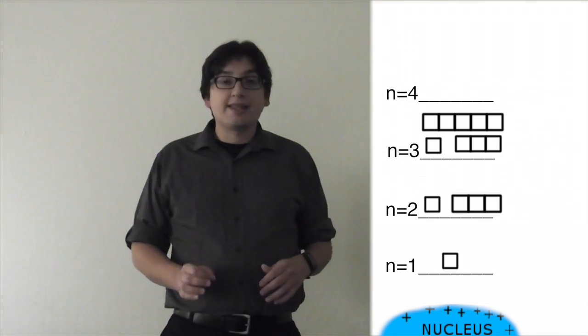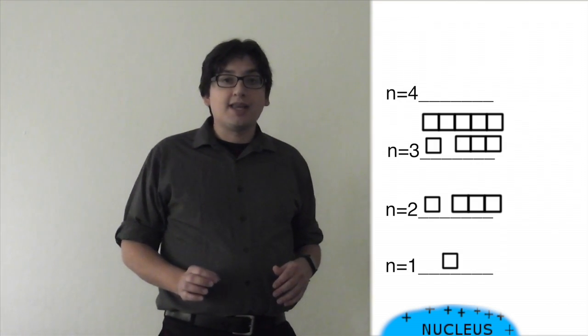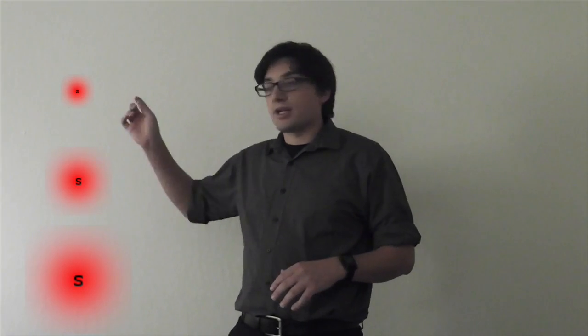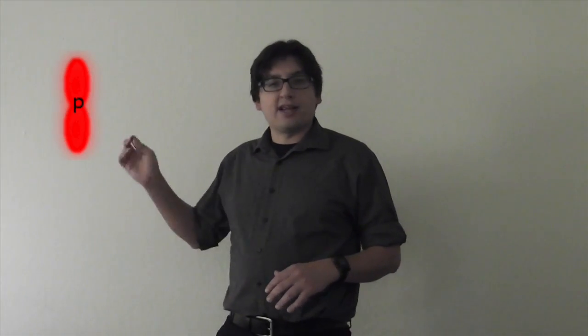Keep in mind, remember that an s orbital looks just like a cloud. There's a 1s and a 2s and a 3s, etc. And then the p orbitals kind of look sort of like two clouds at once.